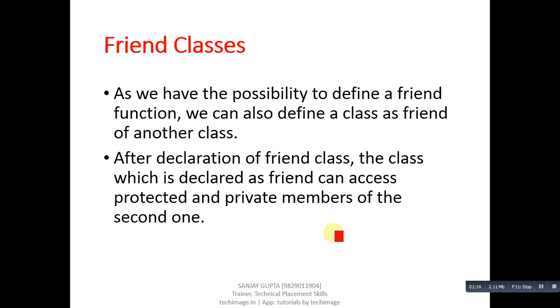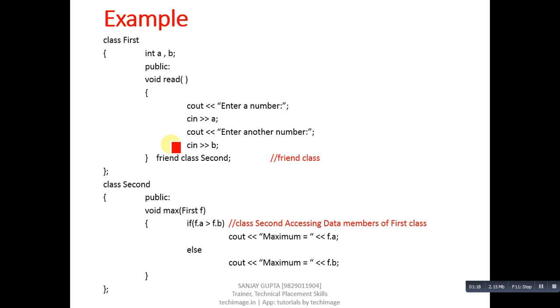This concept can be explained with the help of a programmatic example. Now I am going to explain this example which is based upon C++ which will show you how you can implement the concept of friend classes.